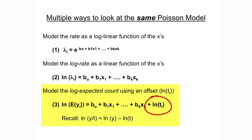An offset is used when we're estimating the rate of event occurrences, but does not need to be used when we just want to estimate a count, because the value of the offset will be the same for all participants. Modeling the log expected count with an offset is mathematically equivalent to modeling the log rate. The purpose of an offset is to adjust a Poisson regression model to account for a denominator — a certain exposure that the number of event occurrences is likely dependent on. This is usually person time, but could also be a unit of space or number of people per group.